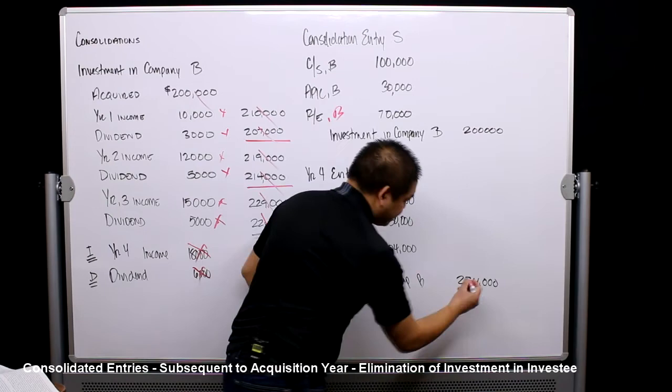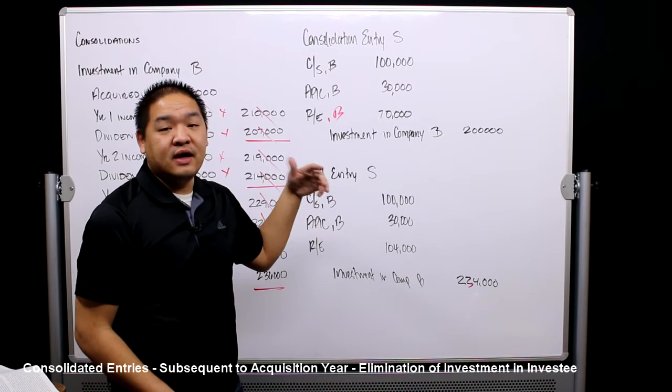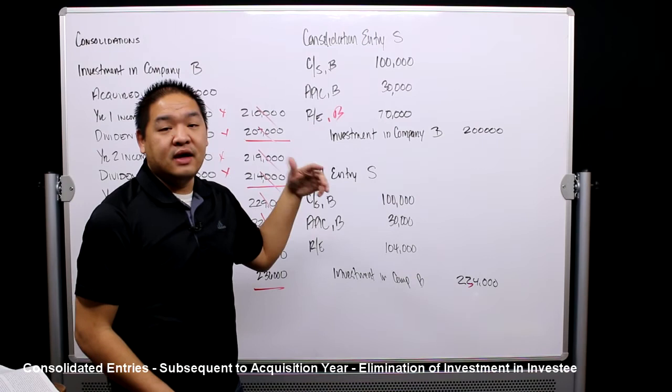The only difference in consolidation entry S in subsequent years is that we use a higher retained earnings amount and a higher investment in Company B credit — everything else stays the same. In the next lesson, we're going to talk about consolidation entry P.